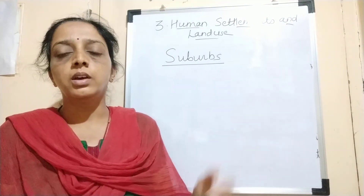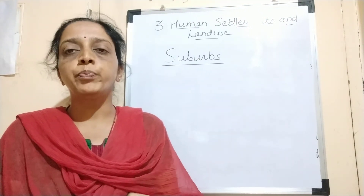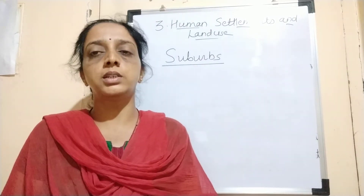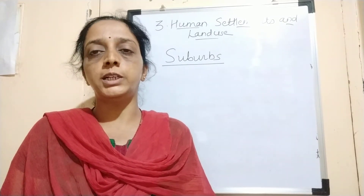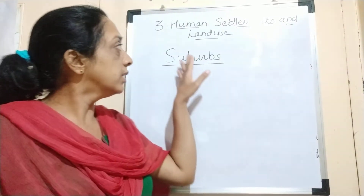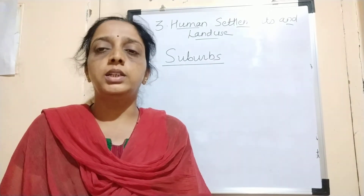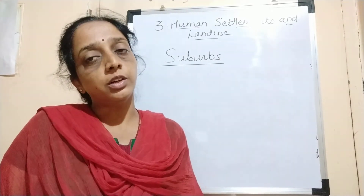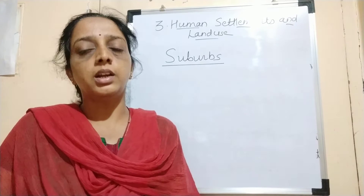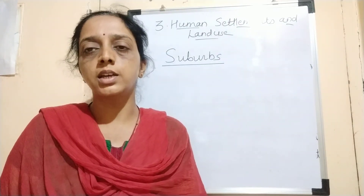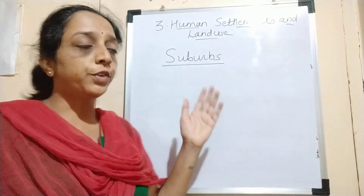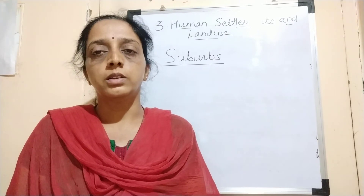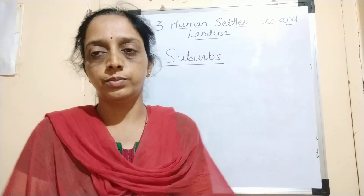In this chapter — the third chapter — we have seen human settlements, types of human settlements, and patterns of human settlements. Then we covered land use, the classification of land use, land use in urban areas, land use in rural areas, and then the fringe areas, villages, and suburbs. Thank you.